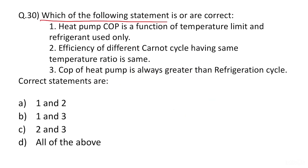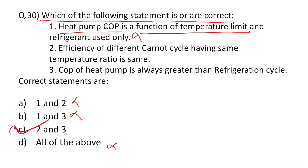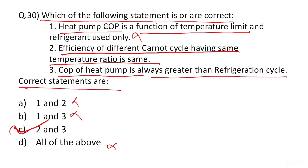Question 30: Which statements are correct? Statement 1: Heat pump COP is a function of temperature limit and refrigerant — wrong, it is only a function of temperature limits. Statement 2 (efficiency of different Carnot cycles having same temperature ratio is same) — correct. Statement 3 (COP of heat pump is always greater than that of refrigeration cycle) — correct. So the correct answer is C. The test ends here — hopefully you have done great. Keep doing well, bye!